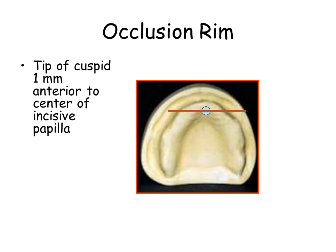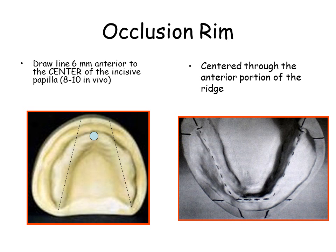Next, draw a line through the center of the incisive papilla and extend the line to the land area. The incisal edge of the maxillary central incisor is located approximately 6 mm anterior to this line on the model, and should be 8 mm in vivo. Draw a line 6 mm anterior to the center of the incisive papilla on the cast model — this will normally be 8–10 mm in the real patient. This line represents the location of the incisal edge of the maxillary rim. Similarly, in the mandibular arch, the mean residual ridge and retromolar pad determine the position and height of the rim, and the anatomic guides assist in the correct positioning of the teeth.